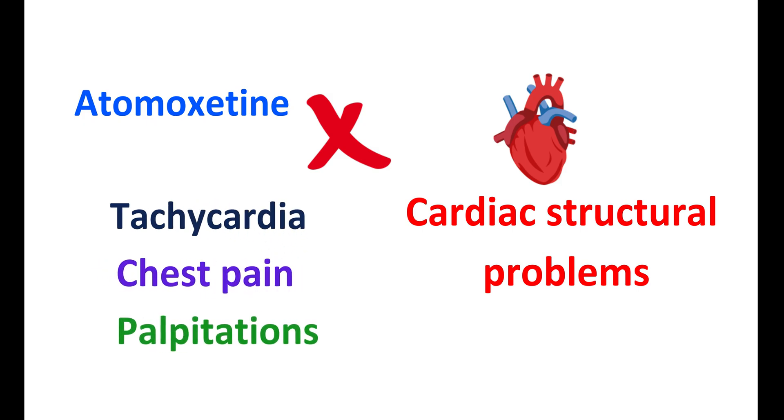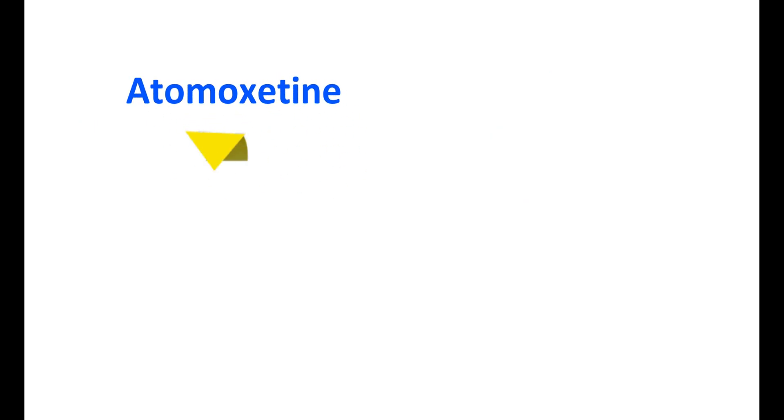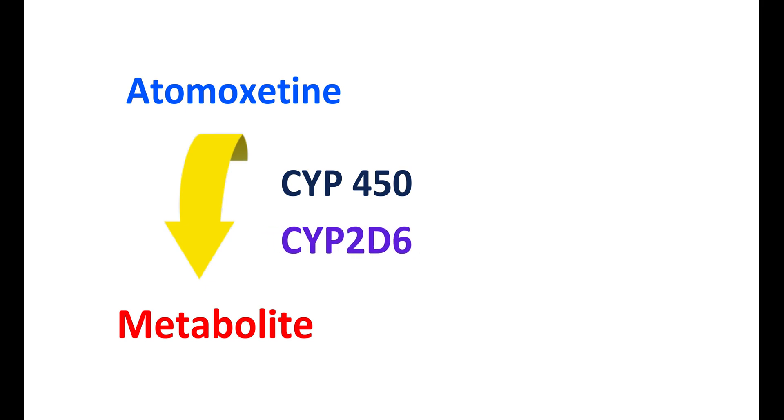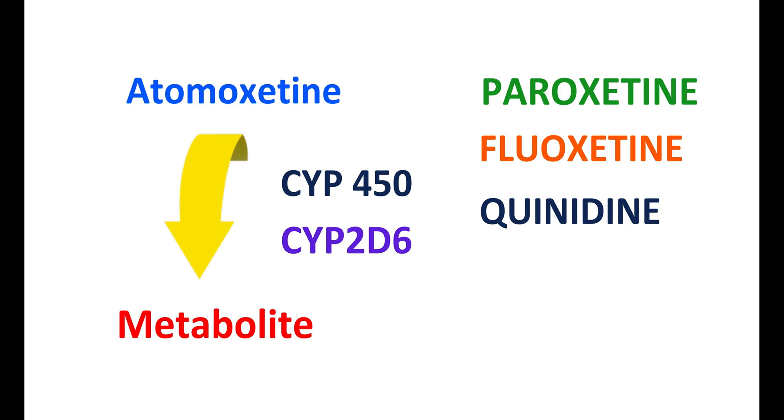Atomoxetine is metabolized by cytochrome P450 system. Among these enzymes, CYP2D6 is one of the important metabolic enzymes that is responsible for clearance of this medication. Drugs like paroxetine, fluoxetine, and quinidine are potent inhibitors of CYP2D6 enzyme which may increase the levels of Atomoxetine in the body when they are given along with this medication. So potent CYP2D6 inhibitors are contraindicated with Atomoxetine.